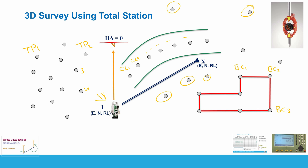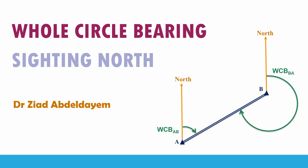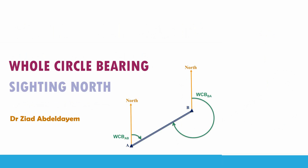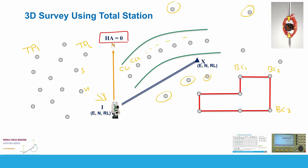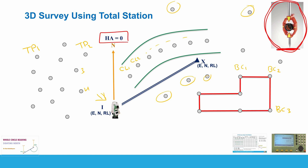To simplify the procedure, start all measurements from north. Set up your total station over station I, sight north, and set the horizontal angle to 0 on the screen of the total station. For more information on how to sight north, there is a separate video called 'Whole Circle Bearing.' After sighting north and setting the horizontal angle to zero, all horizontal angles you measure will be whole circle bearings — an angle from north clockwise to the measured point.